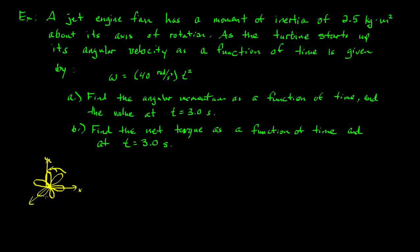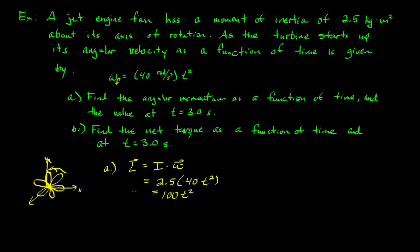The angular velocity is given as 40 t squared radians per second squared. We want to find angular momentum as a function of time and its value at three seconds. For part A, L equals rotational inertia times angular velocity, so L equals 2.5 times 40 t squared, which gives us 100 t squared.